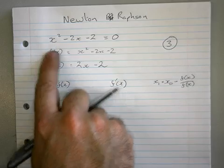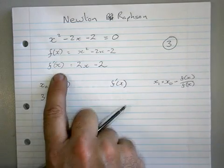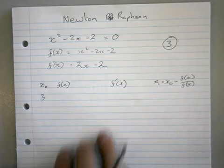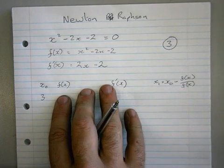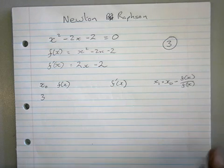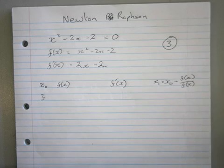Now in the case where this gets very complicated, they'll give you the f' bit as well. So it'll either be very simple like this one, or it will be given for you. And this is the procedure you do. So taking your calculator.